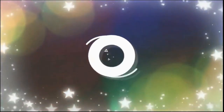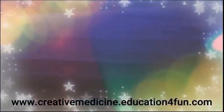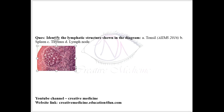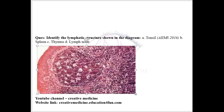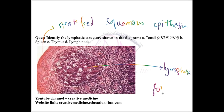Hello friends, welcome to Creative Medicine. In this lecture we will learn how to identify the lymphatic organ given below. Number one, you can say by seeing this — it is lined by stratified squamous epithelium. You can also see a lymphatic follicle here.